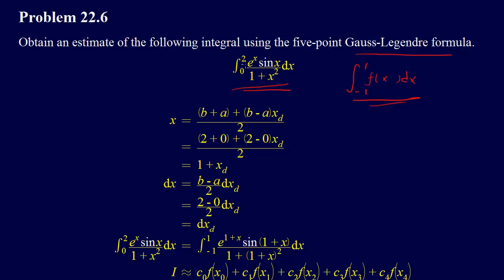We're using the limits a and b, and we can transform the limits of integration according to the formulas in the book. The formula is x equals b plus a plus b minus a times xd, all over two. Plugging in our values, that means two plus zero plus two minus zero times xd over two, which gives us one plus xd.